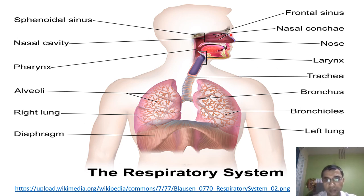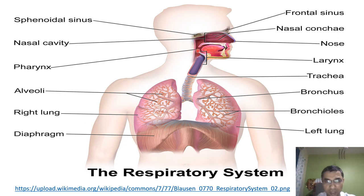Here you will see the nasal conchae, the frontal sinus, and the nasal cavity. This nasal cavity opens into the pharynx. The pharynx is a junction — the mouth also opens into the pharynx, the ear also opens into the pharynx, and here the trachea as well as the esophagus also open into the pharynx. So the pharynx is known as a junction.